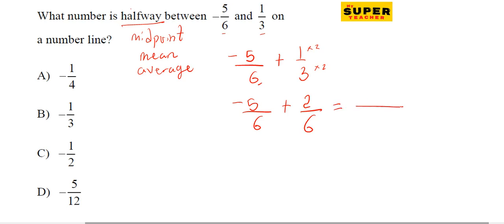Since they have the same denominator, we have 6 as the denominator, and minus 5 plus 2 in the numerator. That gives you minus 5 plus 2 equals minus 3, so minus 3 over 6.